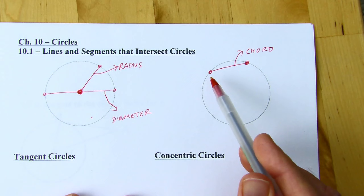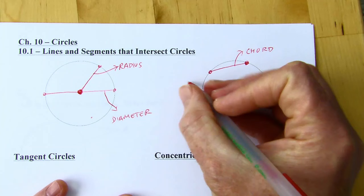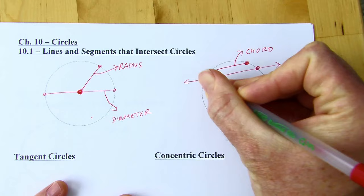A diameter is a special type of chord that goes through the center. And then if we draw a line that passes through a circle twice — something like this — this is called a secant line.